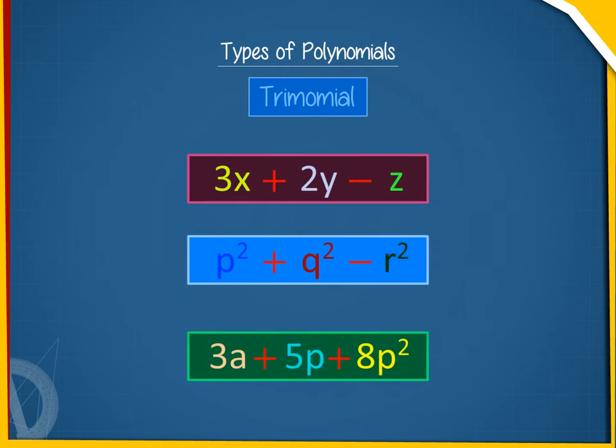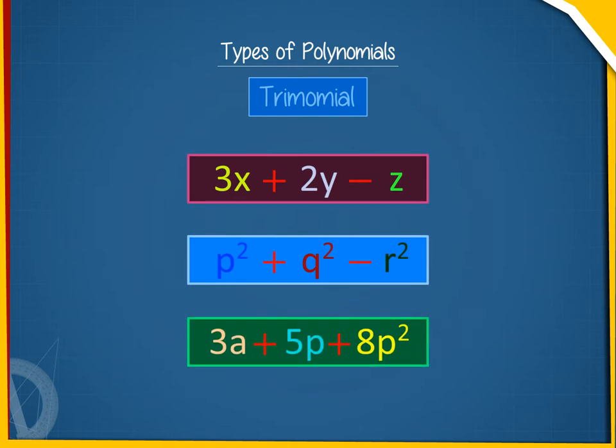Trinomial. An expression containing three terms is called a trinomial. Examples: 3x + 2y - z, p squared + q squared - r squared, 3a + 5p + 8p squared are trinomials.